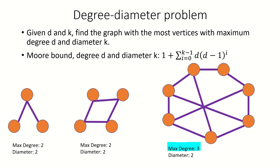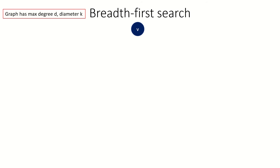It turns out that there's an upper bound known as the Moore bound for how many vertices a graph with max degree d and diameter k can have. Let's take a look at how this bound was discovered. Think about the tree formed by breadth-first search on any vertex v in a graph with max degree d and diameter k.